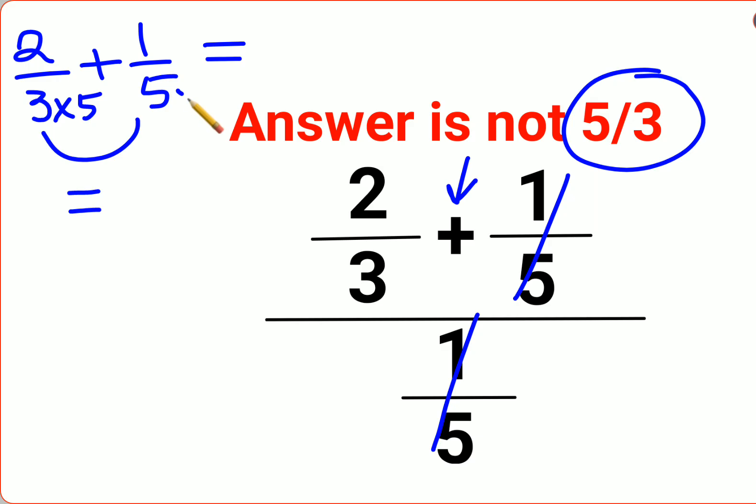Basically, whatever operation needs to be done in the denominator should be carried out in the numerator, right? So this becomes 10 by 15 plus 3 by 15.